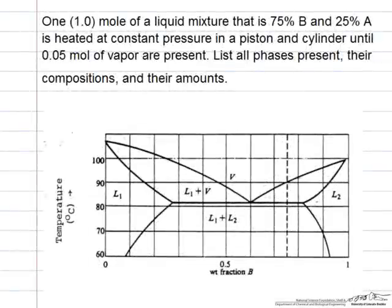In this problem we have partially immiscible liquids. We start out with a system where one mole of a liquid mixture is heated at constant pressure until 0.05 moles of vapor are present.